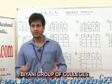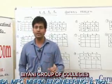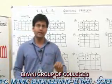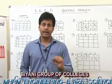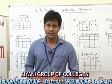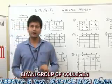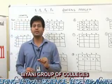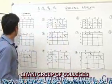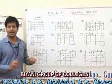In the Queens Problem, we need to place N queens on an N-by-N chessboard such that no queen attacks another. We need to place N queens on N different rows, different columns, and different diagonals at the same time.